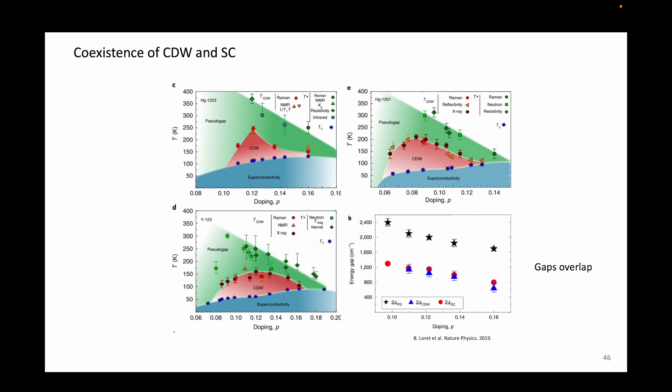Here, they showed that the charge density wave and the superconducting gap seemed to coincide with each other across several dopings. So this goes to say that the coexistence and competition between superconductivity and charge density wave are yet to be fully understood.